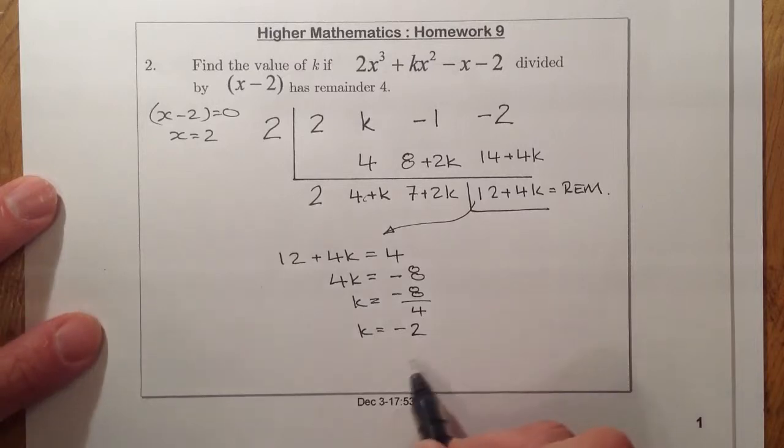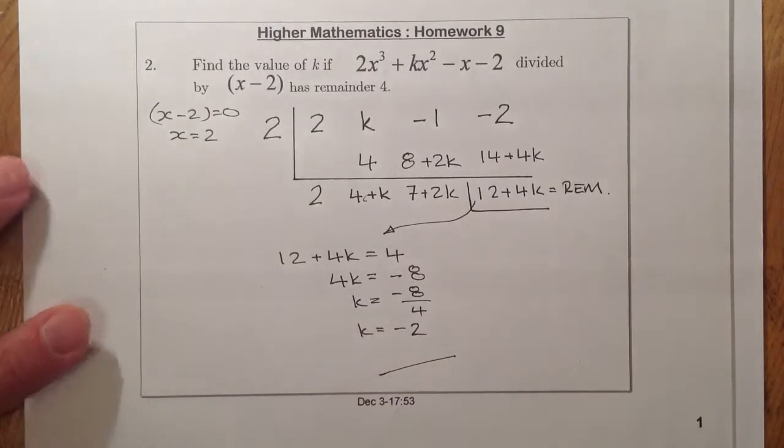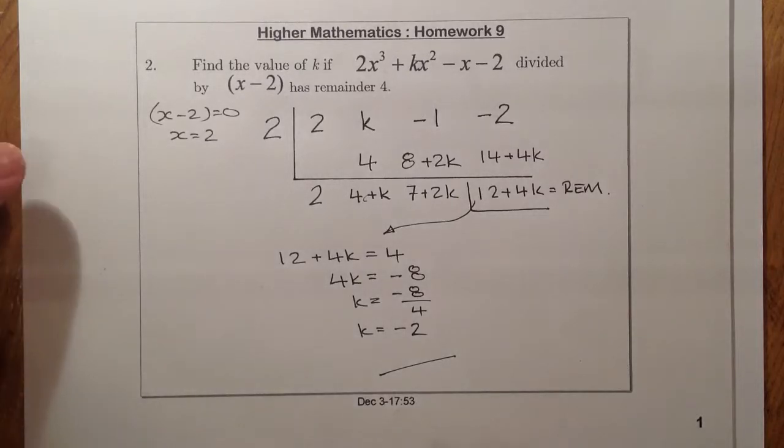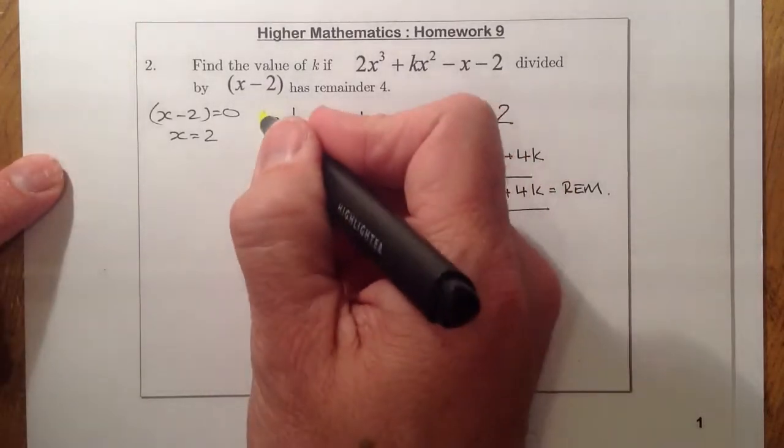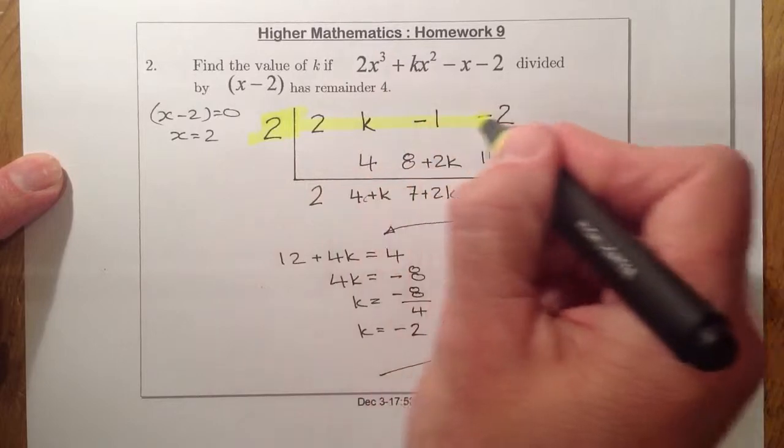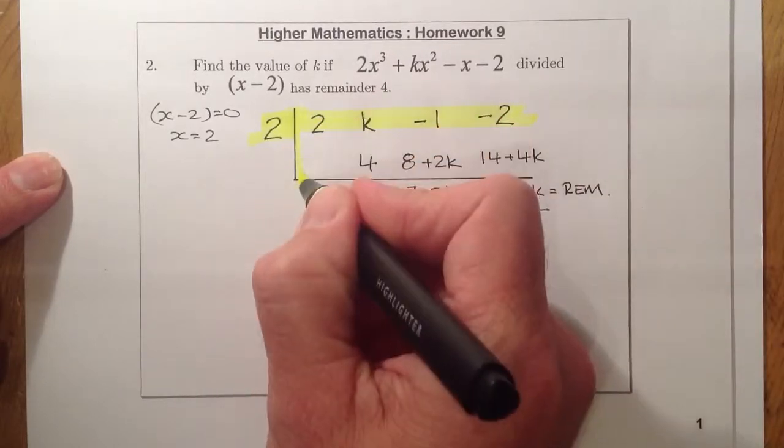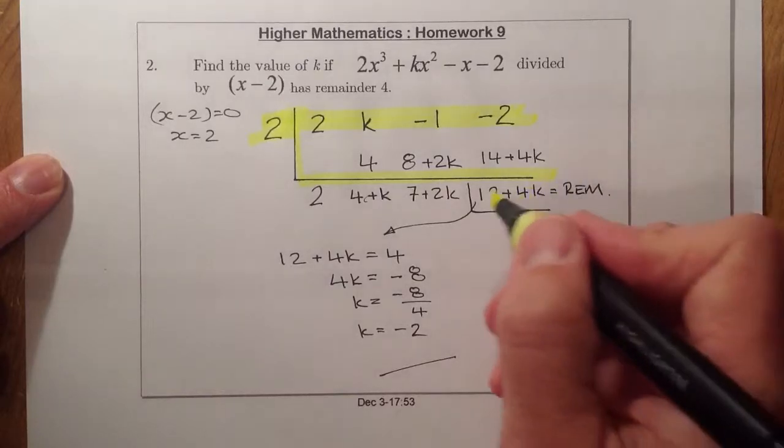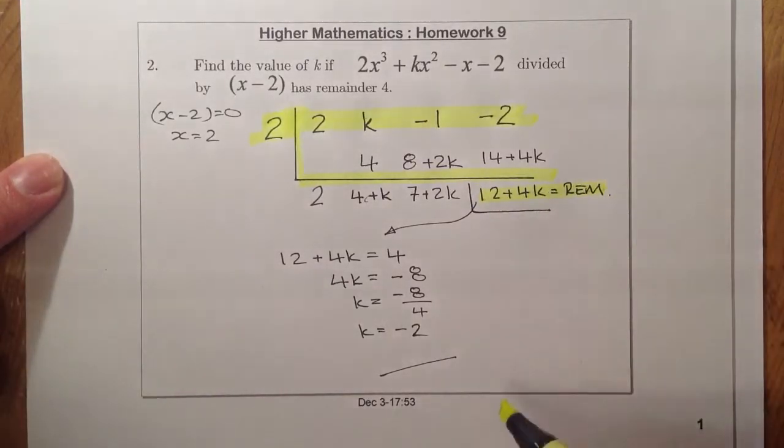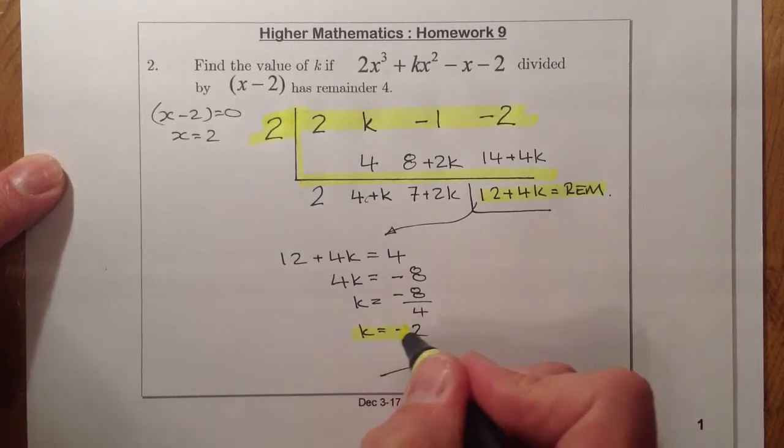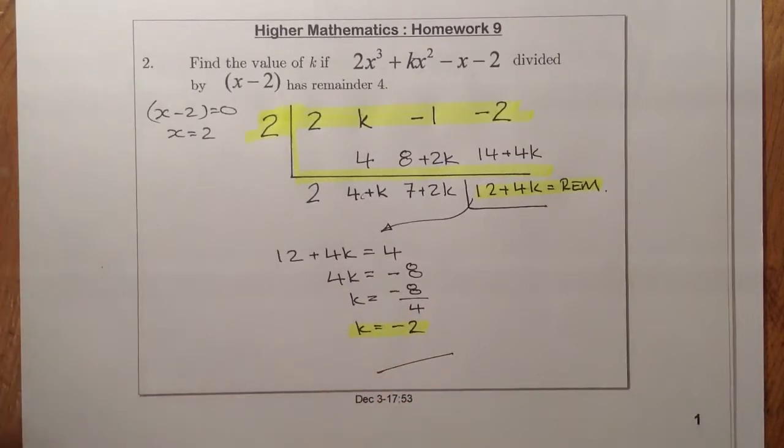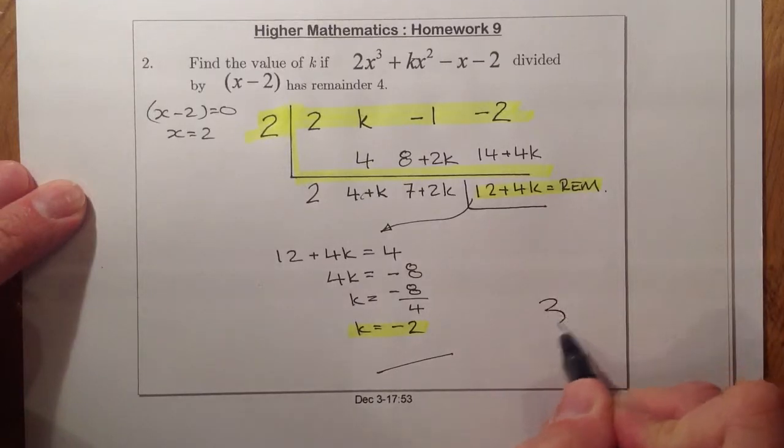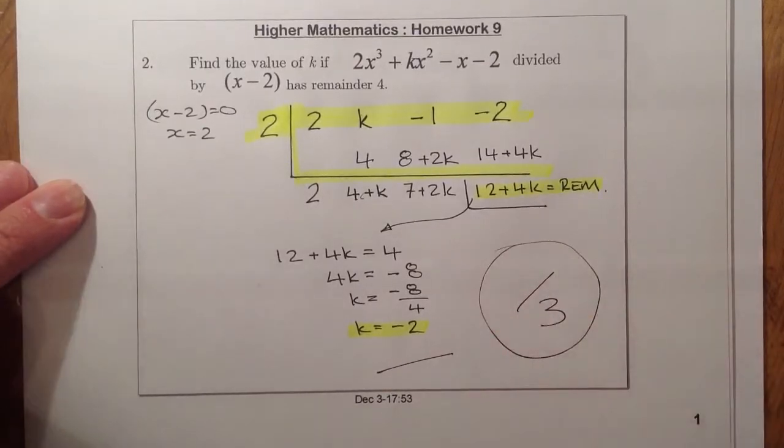Okay, so that looks like the question complete. Let's see how I would mark this one. I'll go for one mark for getting the two, setting up the division. That's one mark. I'm going to go for one mark for getting the remainder correct. And finally, one mark for getting k is equal to minus two. Right, so from there, that's going to be a three mark question.